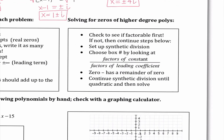For higher order polynomials, the very first thing we're going to do is check to see if it's factorable. If it is not factorable, then we can solve using synthetic division. The way that we choose our box number is by doing the factors of the constant divided by the factors of the leading coefficient. We call these possible rational zeros. Any zero that would possibly be a fraction or a whole number will be one of these options. We know something is a zero if it has a remainder of zero, then we use synthetic division until it is quadratic and solve it.